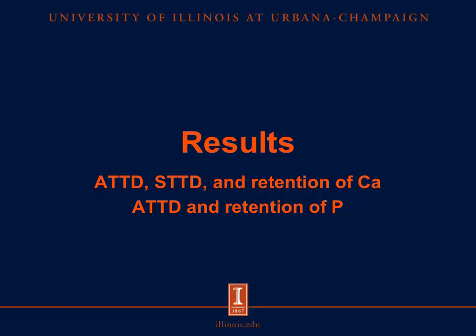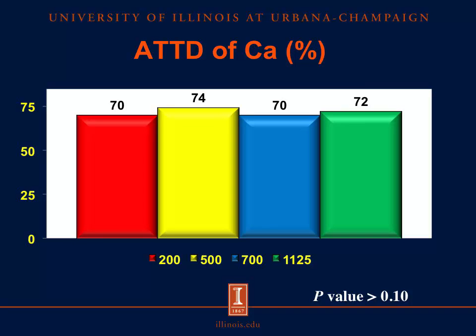Now let's move to our results. First, I would like to orient you to this graph, as the subsequent graphs will follow the same format. Across the x-axis, we have our experimental diets, with the red bar indicating the diet containing calcium carbonate ground to 200 microns, the yellow bar indicating 500 microns, the blue bar indicating 700 microns, and the green bar indicating 1,125 microns. Here, I am presenting the apparent total tract digestibility of calcium, expressed as a percentage. We observed no differences among our dietary treatments, with values ranging from 70 to 74.